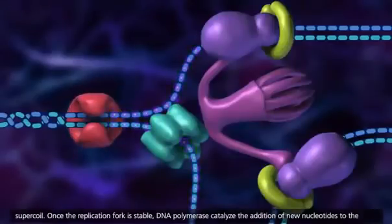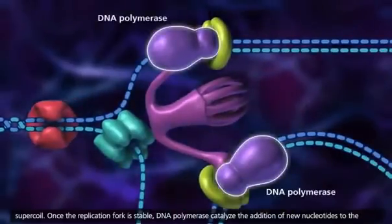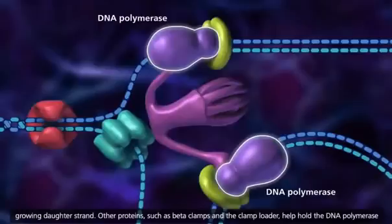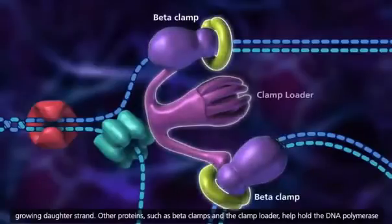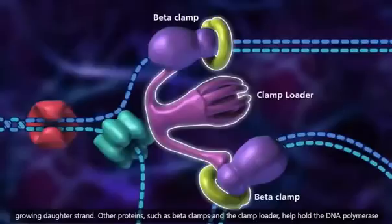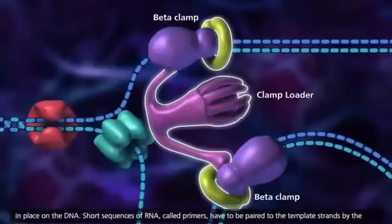DNA gyrase is used to make sure the double-stranded areas outside of the replication fork do not supercoil. Once the replication fork is stable, DNA polymerase catalyzes the addition of new nucleotides to the growing daughter strand. Other proteins, such as beta clamps and the clamp loader, help hold the DNA polymerase in place on the DNA.